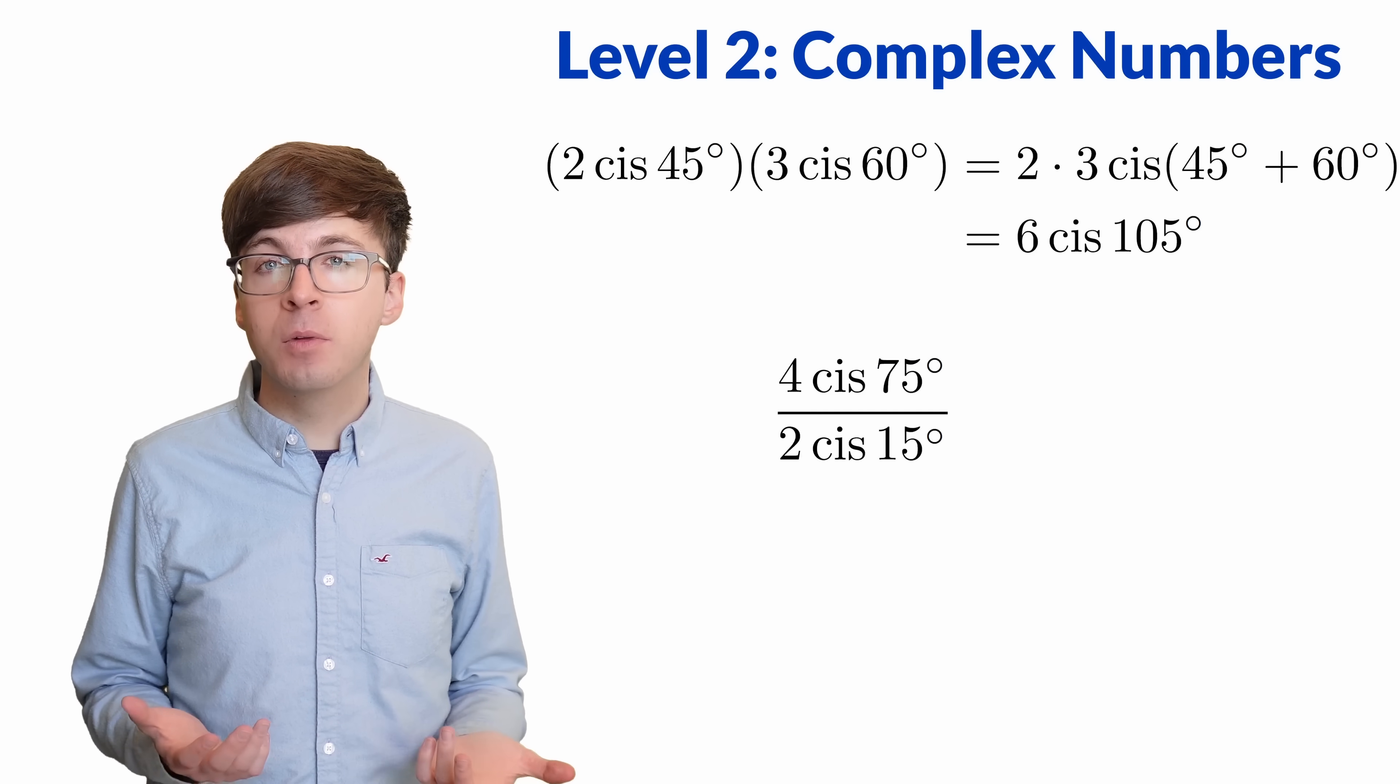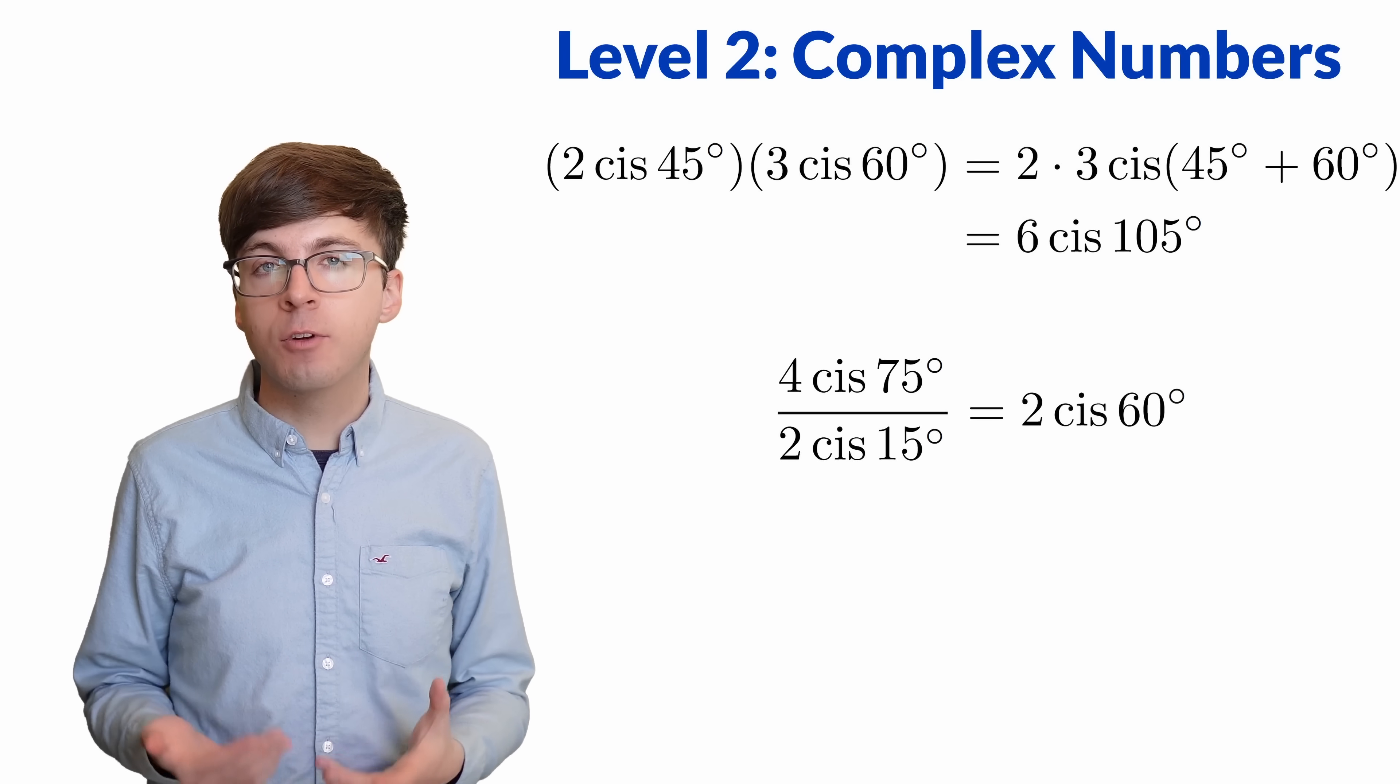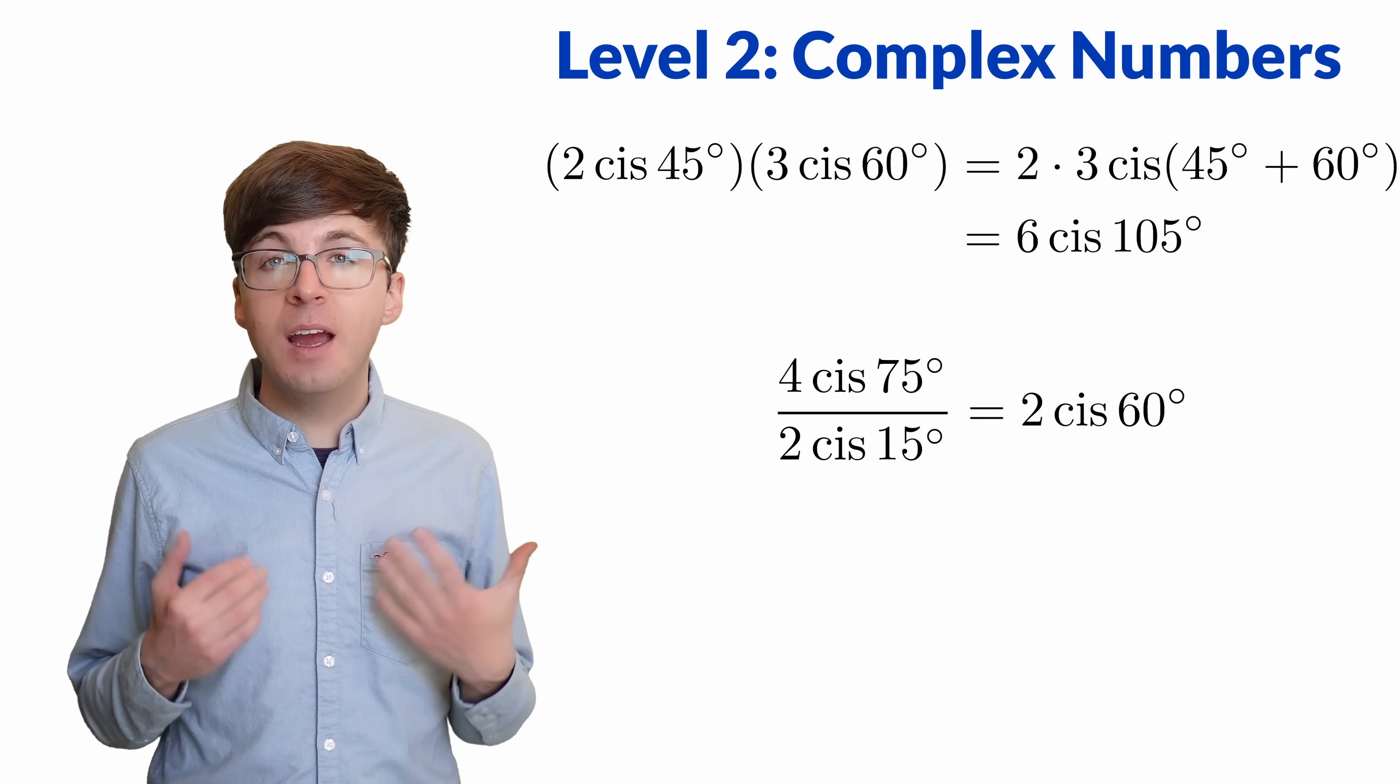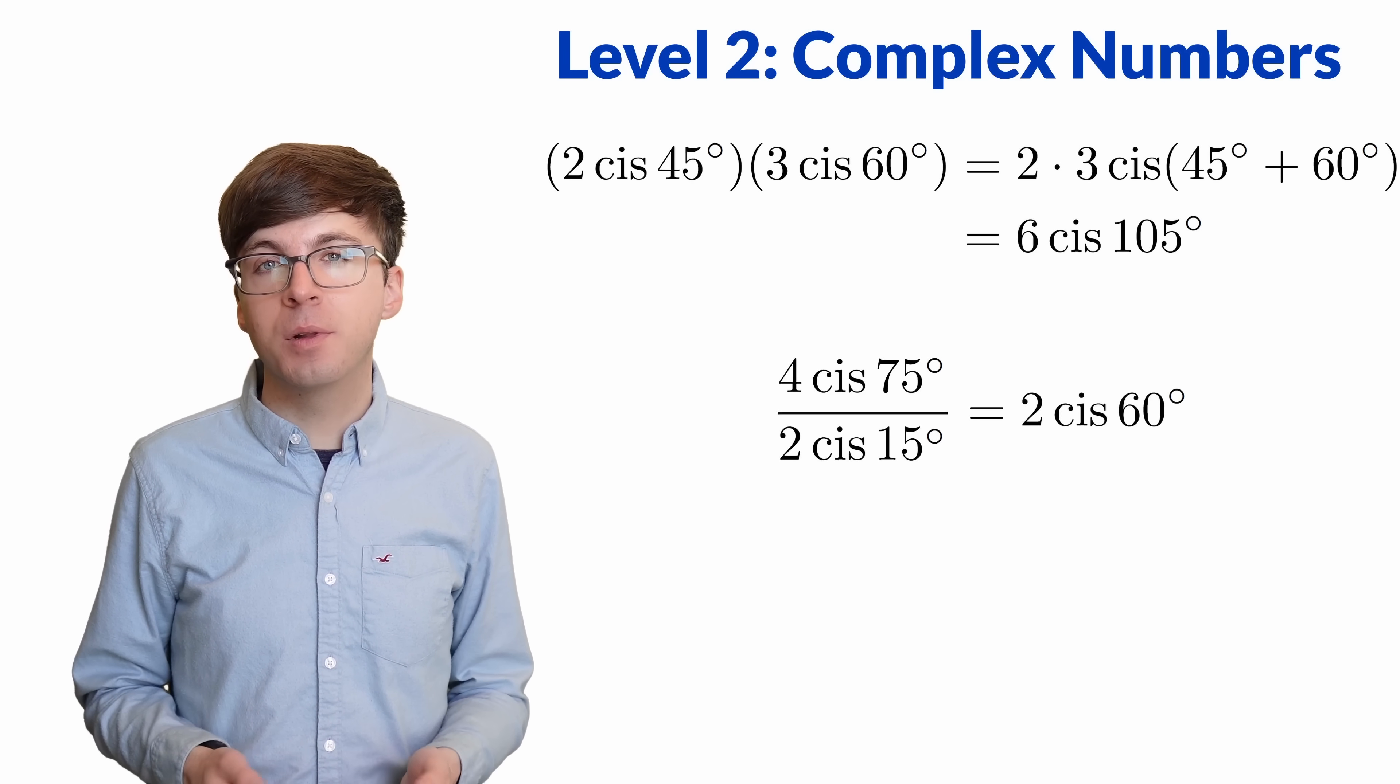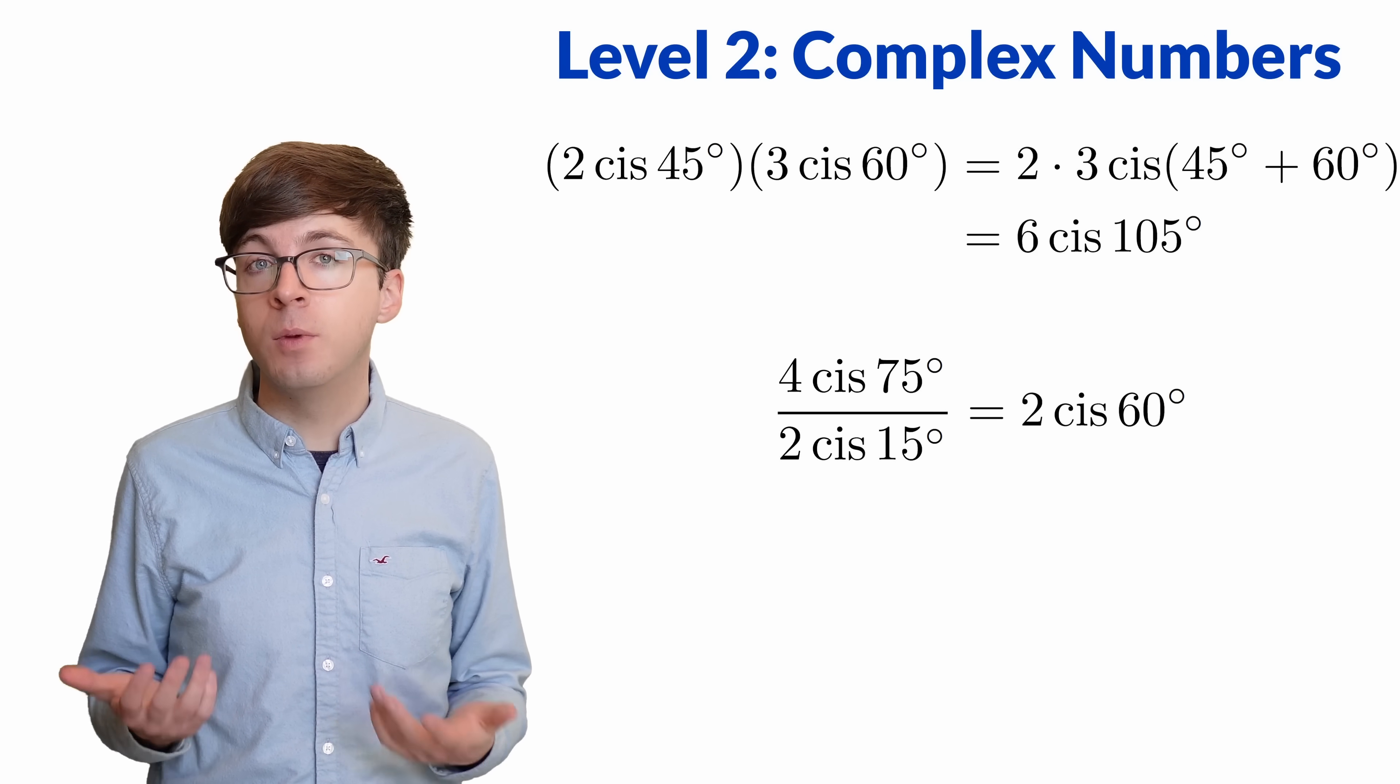Dividing by complex numbers is also easy in polar form. We divide the radii and subtract the angles. We now have a solid definition for the complex numbers, but if this hasn't fully convinced you, there are other ways we can define them.